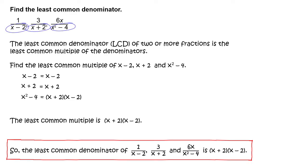So, the least common denominator of 1 divided by the quantity x minus 2, 3 divided by the quantity x plus 2, and 6x divided by the quantity x squared minus 4 is the quantity x plus 2 times the quantity x minus 2.